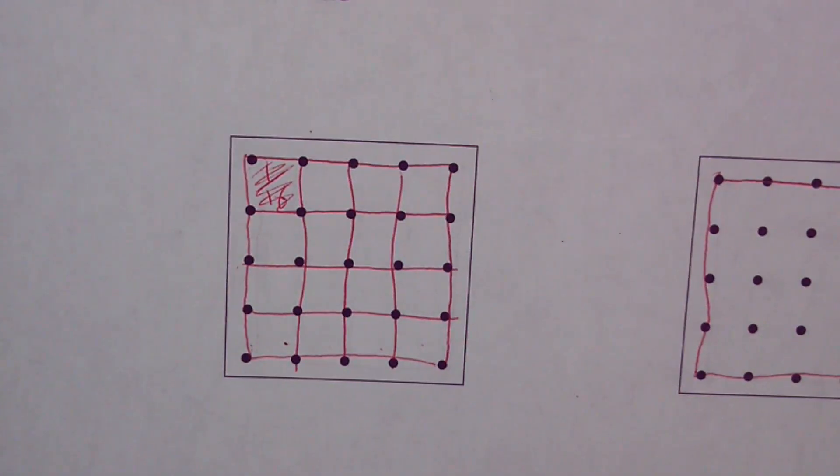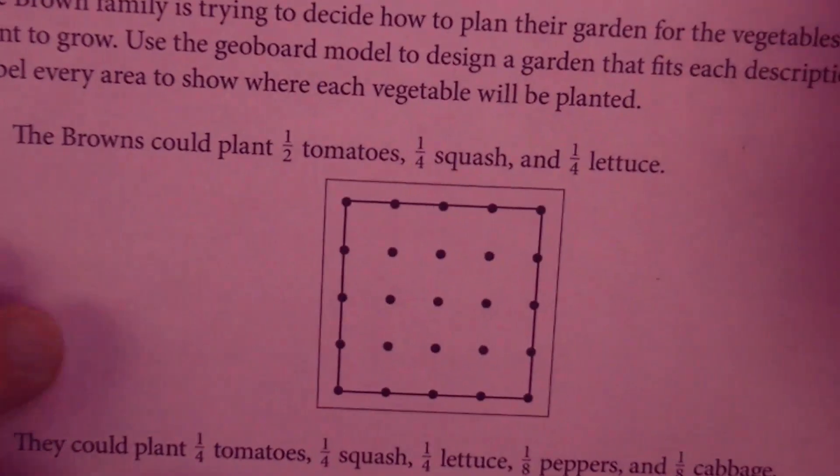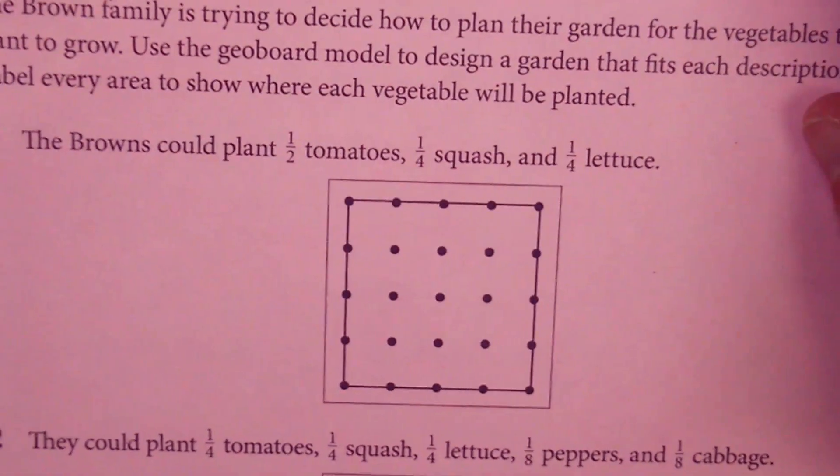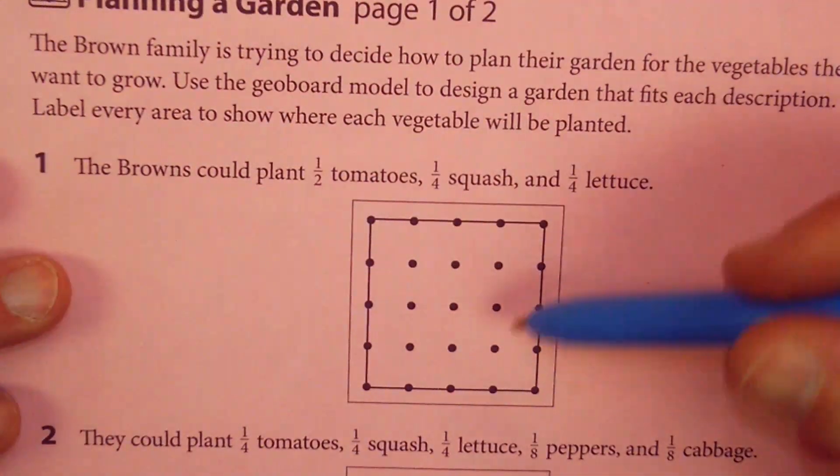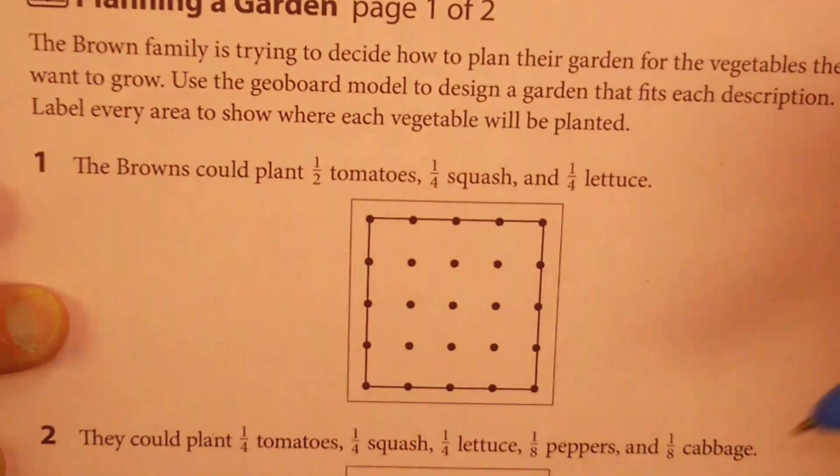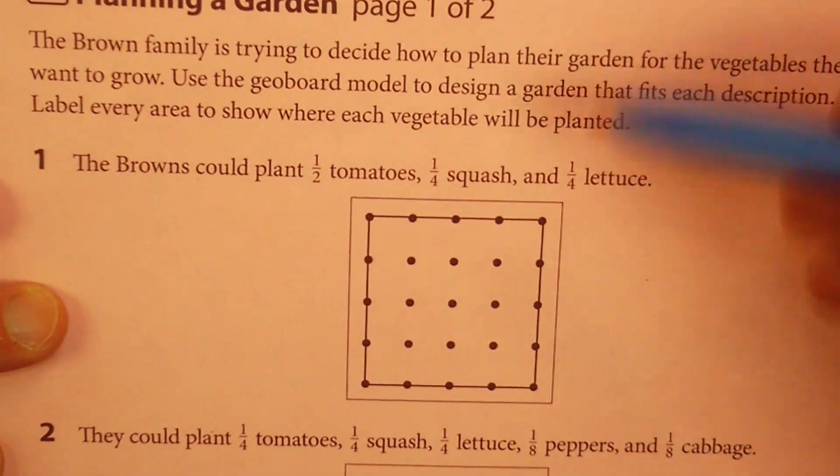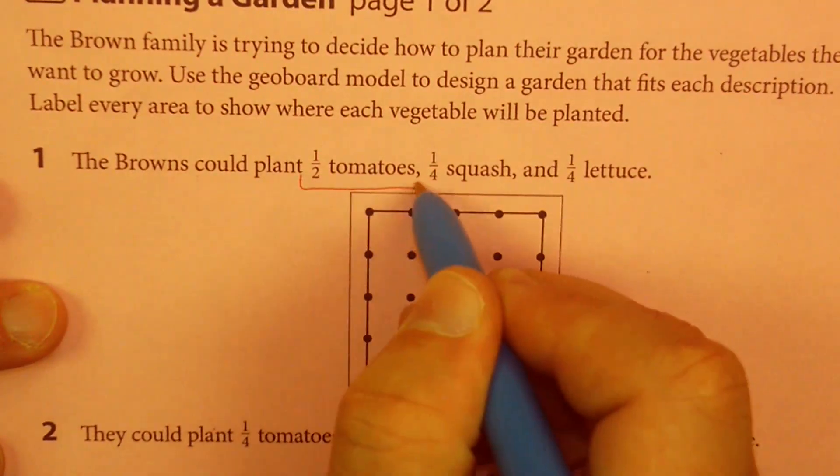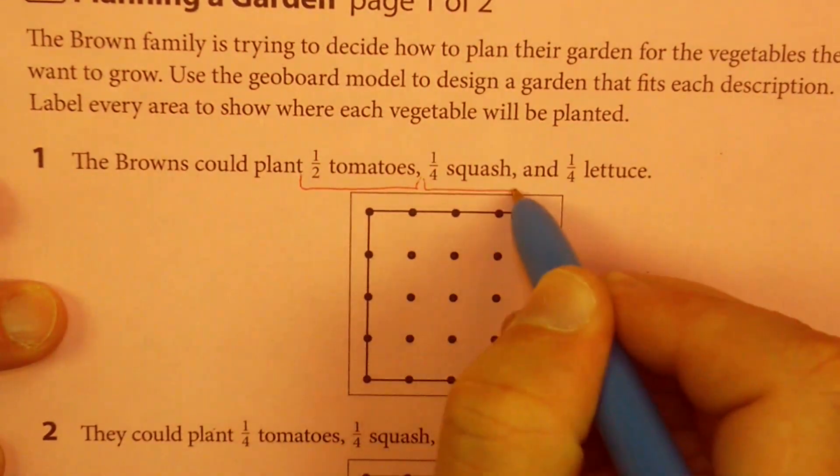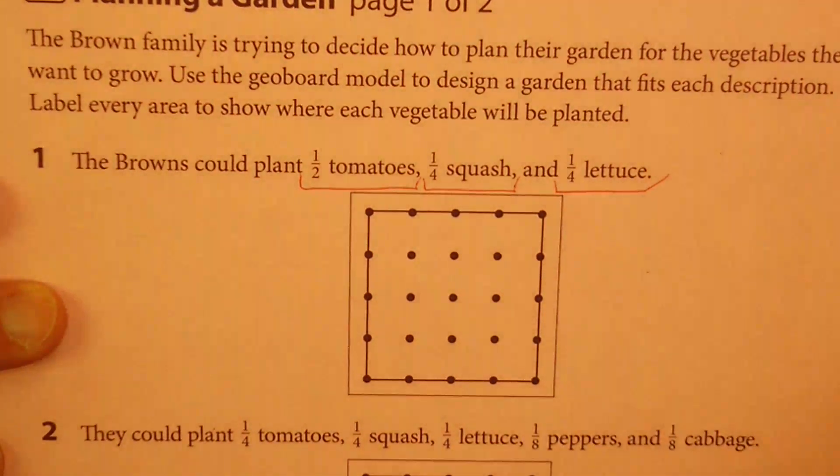I just wanted to bring that up real quick before we started this lesson. That's a quick refresher in our geoboards and how to divide them up into different fractions. So the Brown family is doing a garden, and each one of them wants to do it a little bit differently. Here it says they want you to divide this geoboard so that half of it goes to tomatoes, one-quarter of it goes to squash, and one-quarter of it goes to lettuce.